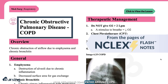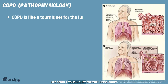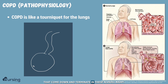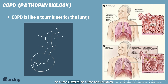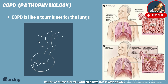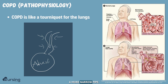Regarding some patho around COPD, it's important to think about COPD like being a tourniquet for the lungs. You have these bronchioles that come down and terminate in these alveoli. What is occurring in COPD is we have a chronic constriction, tightening, narrowing of these airways, of these bronchioles, which as these tighten and narrow and clamp down, you're having a decreased inside lumen — a more narrow pipe.